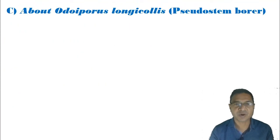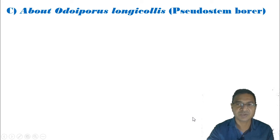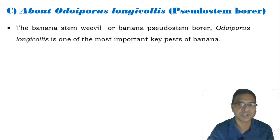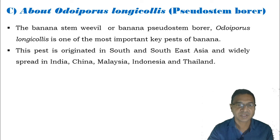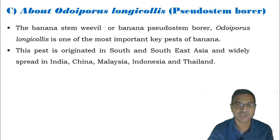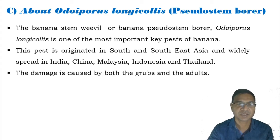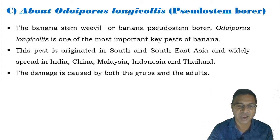Next is a detailed discussion of Odoiporus longicollis, basically known as the banana stem borer or pseudo-stem borer. This is one of the most important key pests of banana, originating in South and Southeast Asia and widely spread over India, China, Malaysia, Indonesia, and Thailand. The damage is caused by the developmental stages — the larva, or grubs in the case of beetles — as well as adults.